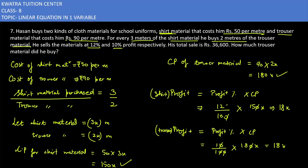Now we need to calculate selling price. Selling price equals cost price plus profit. Cost price for shirt is 150x plus profit 18x, which equals 168x. This is the selling price for shirt material.